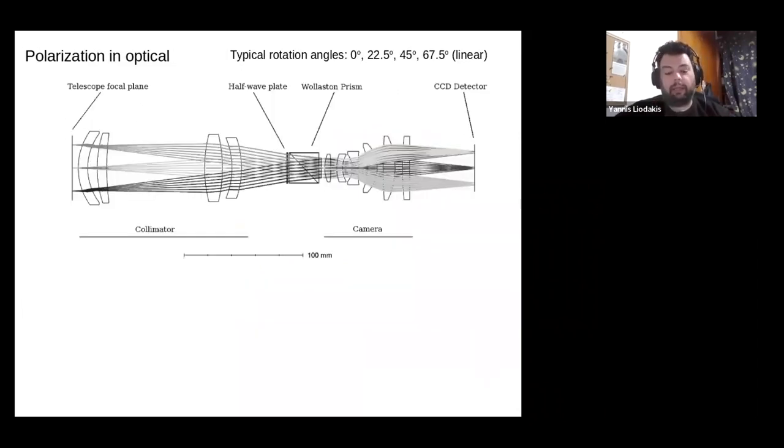But before I do that, let me tell you a little bit about how we measure polarization in the optical. There are different ways you can do it, but the basic principle is the same. You have light coming in from your telescope, and then you have some half-wave plate, some birefringent crystal. Nowadays, the most common one is what we call the Wollaston prism. And then you have your detector, which for optical telescopes, that's just a CCD camera. The main idea is that you will rotate the plane of polarization using the half-wave plate, and you will measure the intensity of the light coming from your source in different angles. And you need at least four, which you can see up there, at least for linear polarization. If you measure the intensity of those four different angles, you can combine the measurements, estimate what we call the Stokes parameters, and then from that calculate the polarization degree and angle of your source.